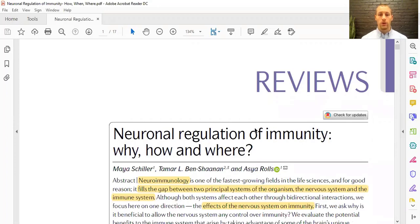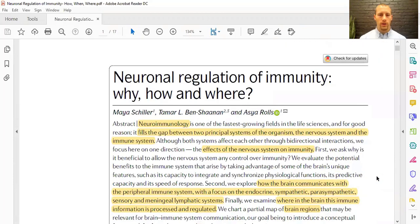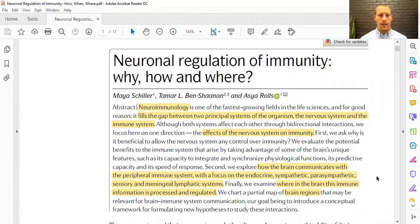I'm sorry if there are a lot of big words and it may be difficult to understand, but I want to go through it step by step. There's a lot of great figures in here. It's called Neuronal Regulation of Immunity: Why, How, and Where. It's from Nature Reviews, a very good journal, from August 2020. Right in the abstract, neuroimmunology is one of the fastest-growing fields in life sciences. It fills the gap between two principal systems of the organism: the nervous system and the immune system. Although both systems affect each other through bidirectional interactions, here they're just going to focus on how the nervous system affects immunity.